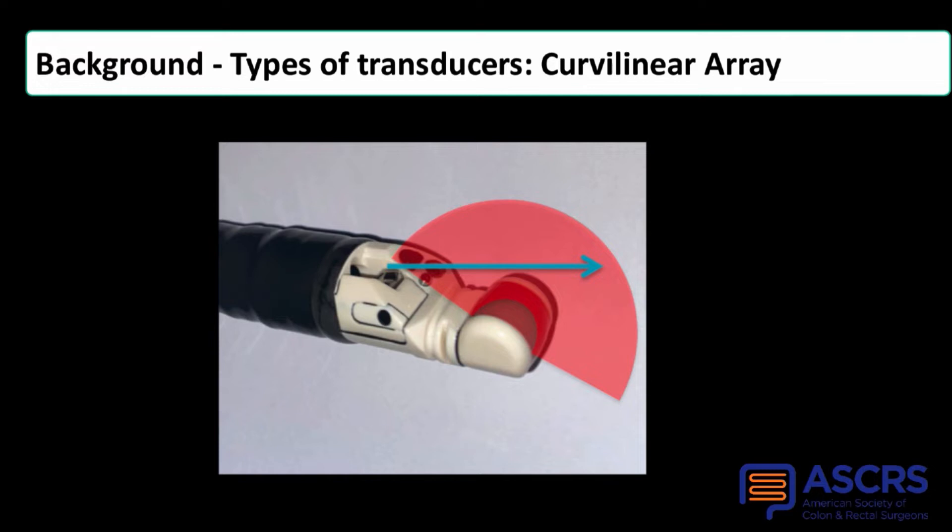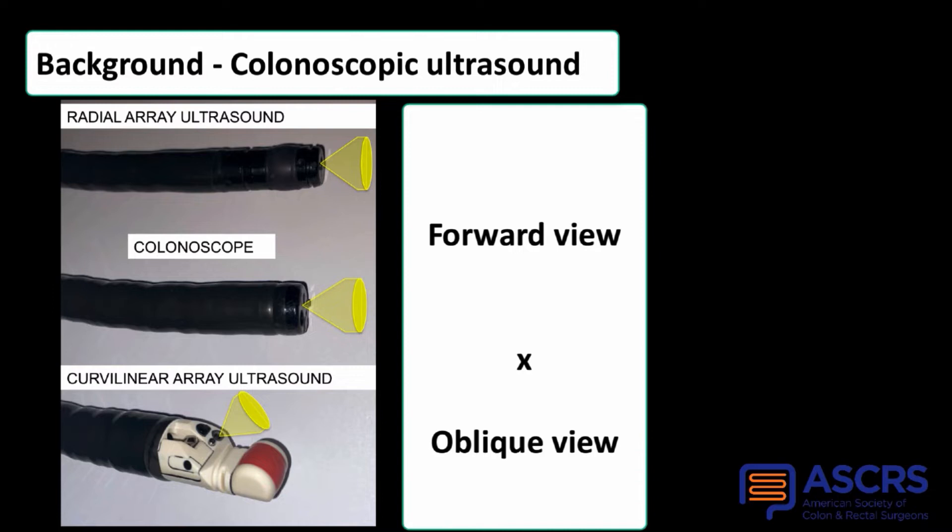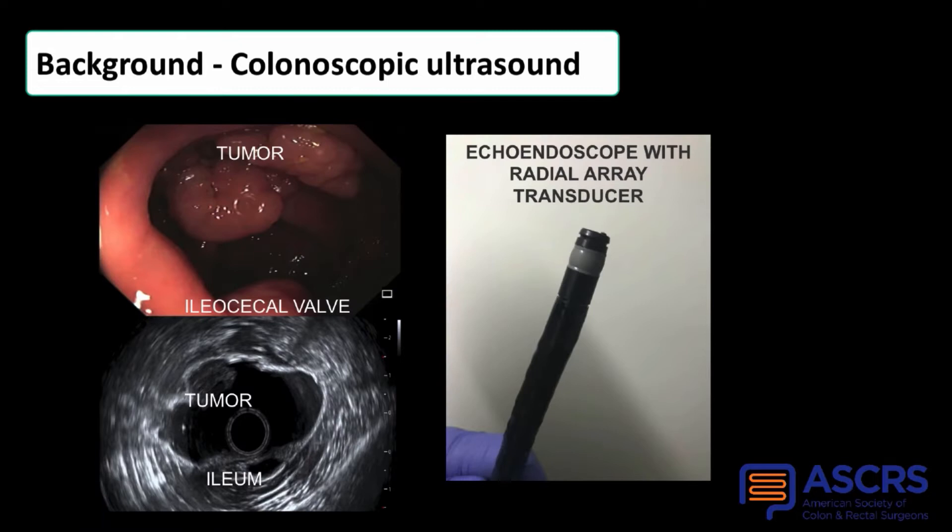Notice that endoscopic radial array transducers are very similar to the standard colonoscope — they both have forward endoscopic views. Differently, on the curvilinear array transducer, this view is oblique, and therefore most colonoscopic ultrasound procedures are performed by radial array transducers.